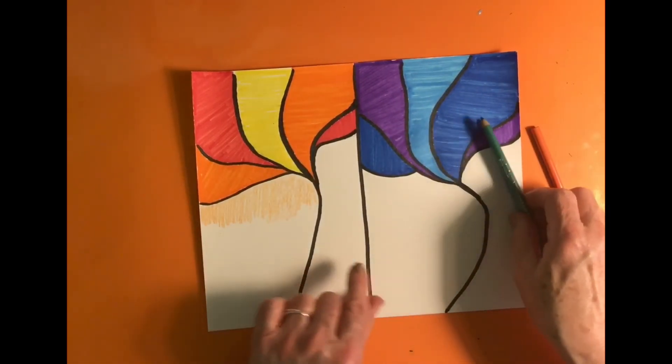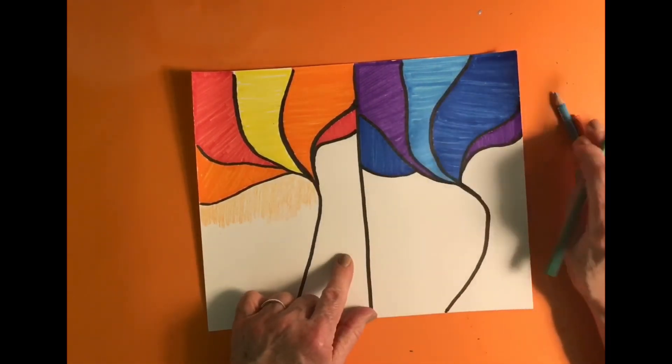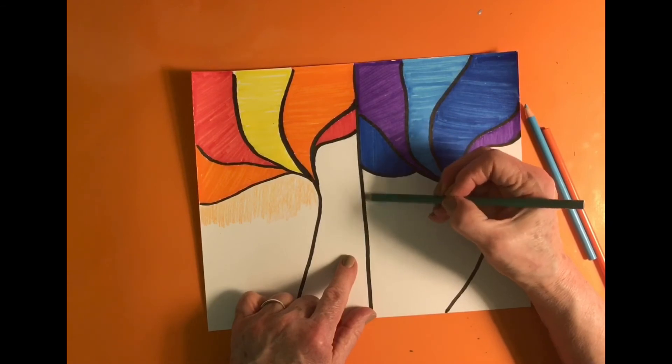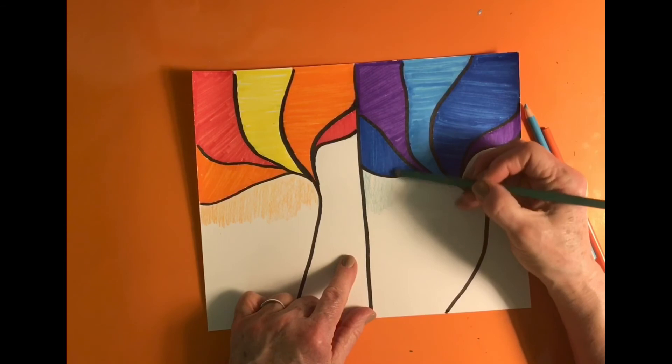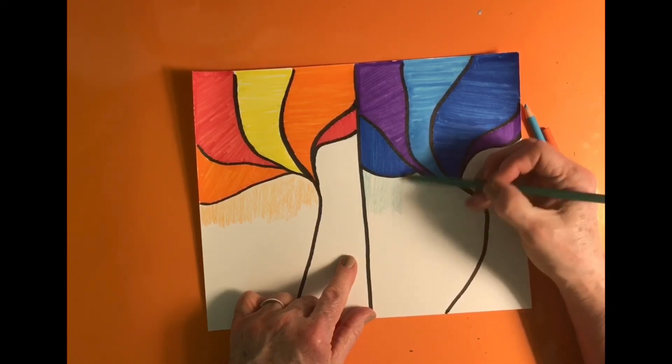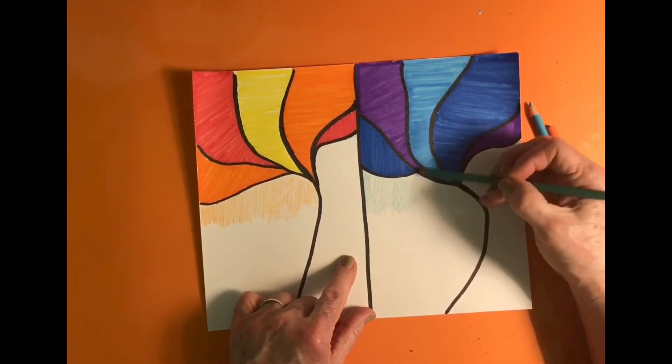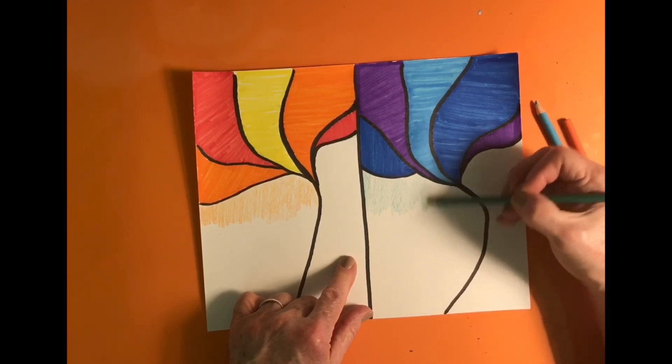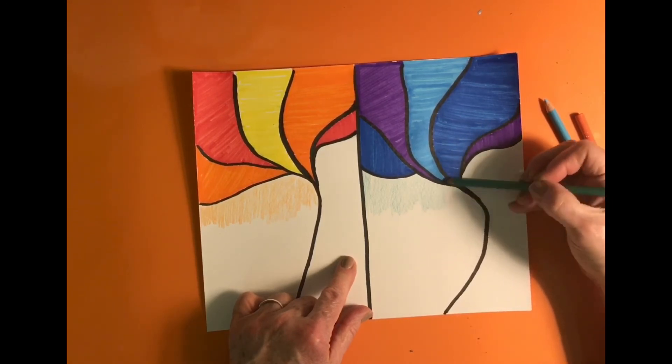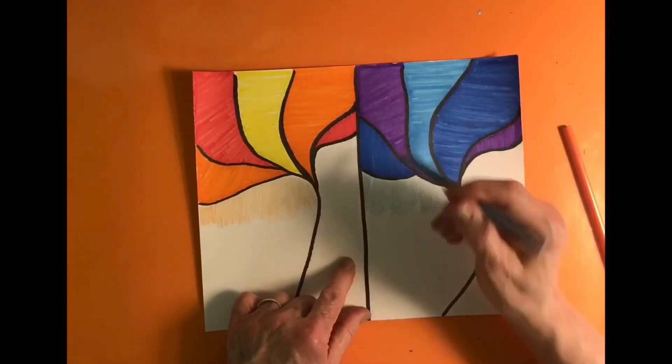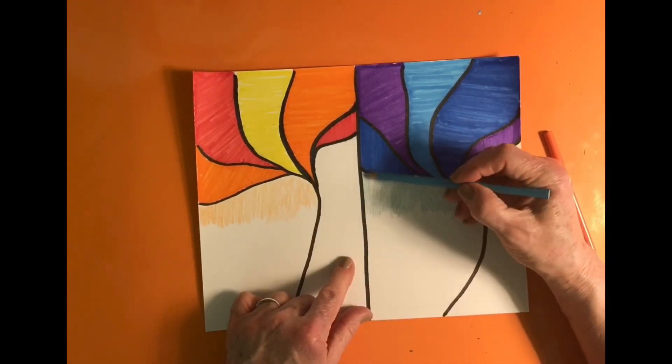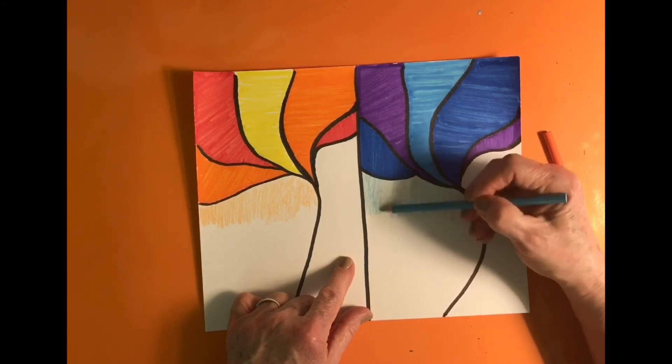And over on the cool side, I'm going to be laying down the green. And I will go over it with blue, so I have a blue-green color.